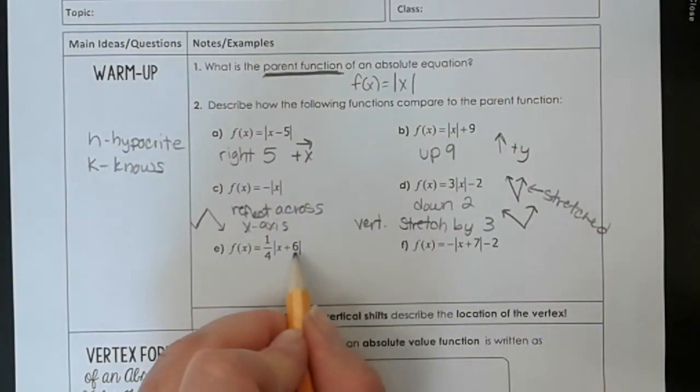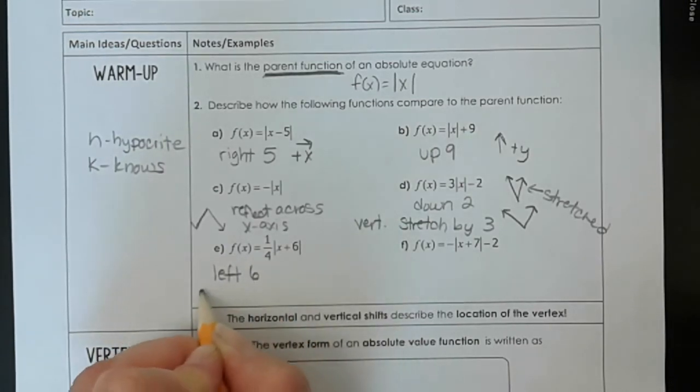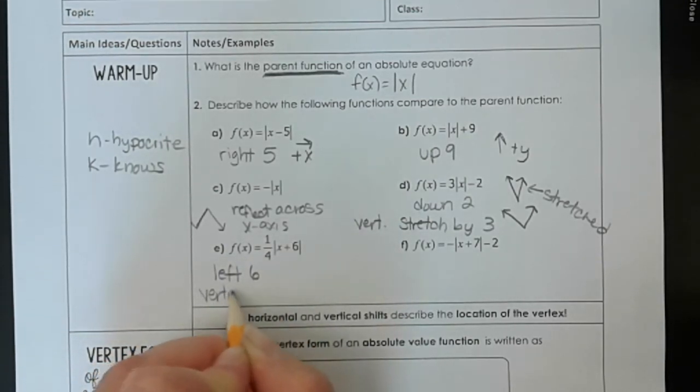Let's look at this one. This one is an h. It's inside of the absolute values. So this one's a hypocrite. We see positive, which means negative. So we're going to go left 6. And this one has a vertical compression.